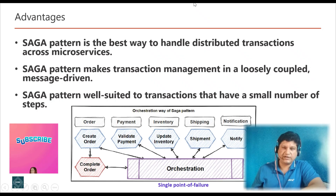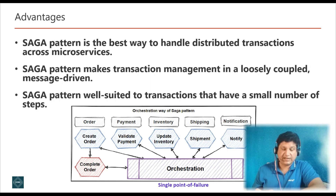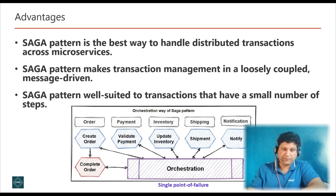Now let's see the advantages of the Saga design pattern. This pattern is the best way to handle distributed transactions across microservices. It makes transaction management loosely coupled and message driven, and is well suited to transactions that have a small number of steps. However, it does have some drawbacks: Saga is complex to manage particularly if a transaction has a large number of steps and the environment is asynchronous. It also requires a good deal of programming, particularly to support rollback in an asynchronous message-driven environment.